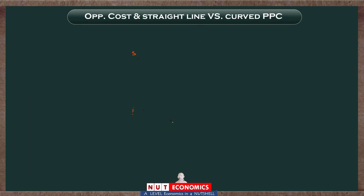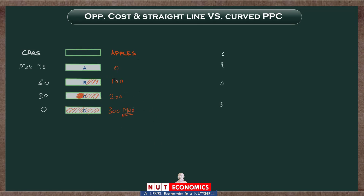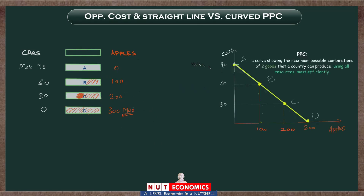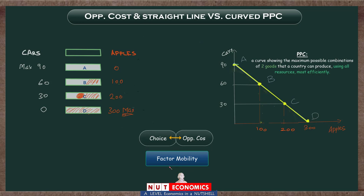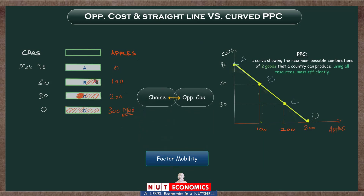In this video we are going to start off using the same numbers and the same graph of PPC that we built in the last video. Now we are going to learn how the ideas of opportunity cost, choice, and perfect and imperfect factor mobility are all captured and reflected by this model of PPC. I will start off by explaining how you can do some simple calculations to calculate opportunity cost, either given this table of production possibilities or this graph of production possibilities.